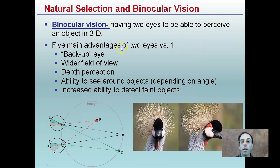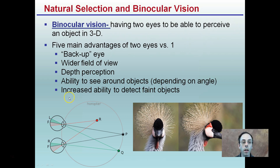There are five main advantages to having two eyes versus only one: a backup eye in case something happens to the left or the right, wider field of view, depth perception, ability to see around objects depending on the angle, and increased ability to detect faint objects.